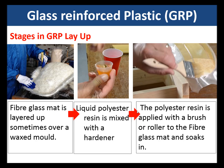Stages in the GRP layup: the fiberglass mat is layered up, sometimes over a waxed mould or former. The liquid polyester resin is mixed with a hardener and then applied with a brush or roller to the fiberglass mat, where it soaks in. Sometimes additional layers are added and sometimes a gel coat is applied on top — but this is the basic three stages in GRP layup.